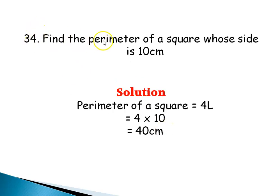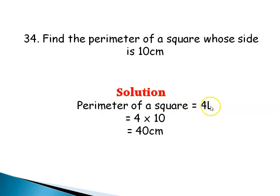Question 34: Find the perimeter of a square whose side is 10 centimeters. The formula for the perimeter of a square is 4L. So 4 times 10 gives us 40 centimeters, and that is the perimeter of the square.